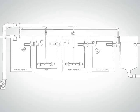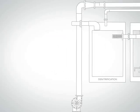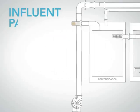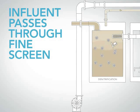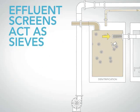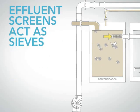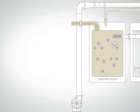Let's walk through an example of the MBBR process designed for total nitrogen removal. To begin the MBBR process, influent from the HeadWorks passes through a fine screen and enters the treatment system. Free-flowing biocarriers are distributed throughout individual reactors, and effluent screens act as sieves to keep the biocarriers within each specific reactor.